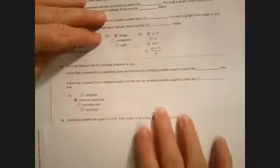We've got a couple of definitions. Number 82: a graph that's connected with no circuits is a tree. For such a graph, every edge is a bridge, and if there are n vertices, there has to be n minus 1 edges. Number 83: fill in the blanks so that this is true. A tree that is created from a weighted graph that has the smallest possible weight is the minimum spanning tree.